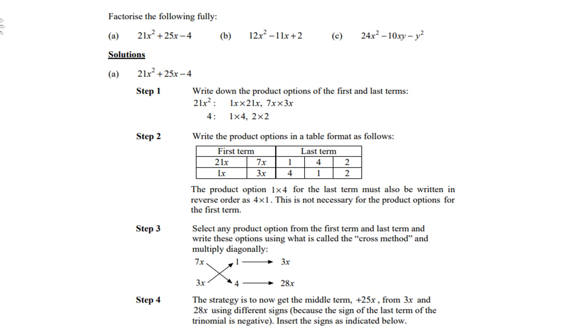Step 3: Select any product option from the first term and last term, and write these options using what is called the cross method, and multiply diagonally. Like 7x times 4 is 28x, 3x times 1 is 3x. Step 4: The strategy is now to get a middle term, 25x, from 3x and 28x using different signs, because the sign of the last term of the trinomial is negative.